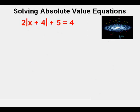Now let's solve this equation. We need to get the absolute value bracket by itself. We need to get rid of the 5 on the left side. We need to move it over to the right side. So on the right side it changes to a negative 5, so it becomes negative 1 on the right side.